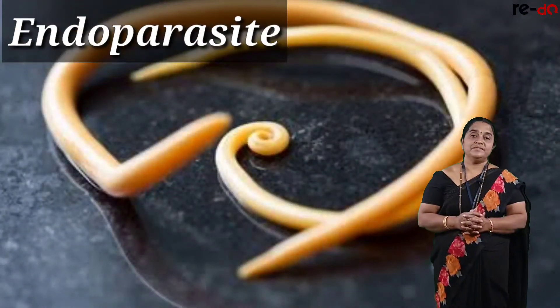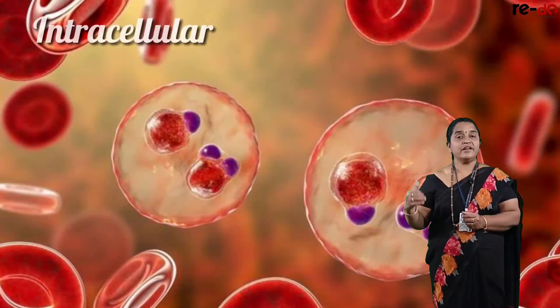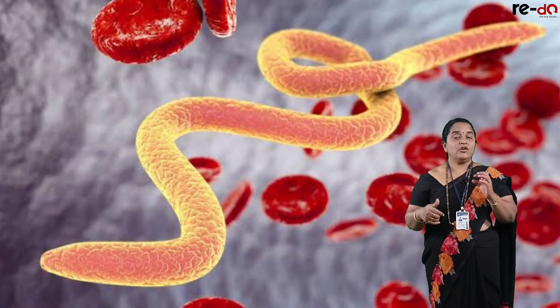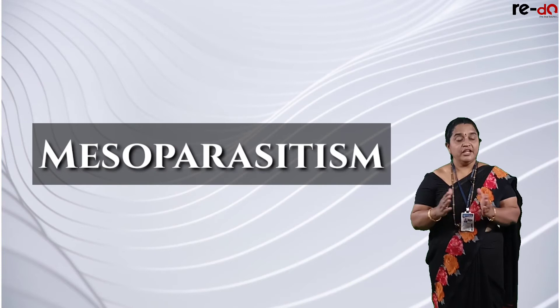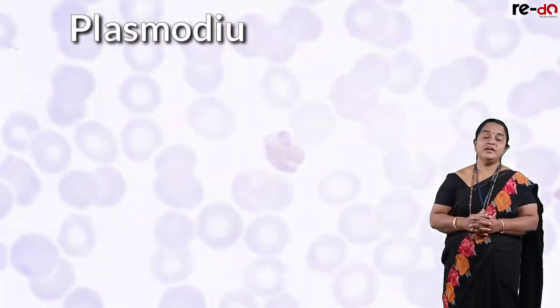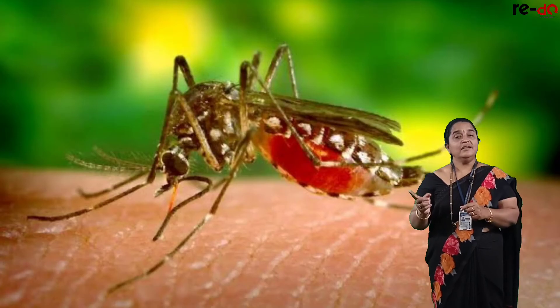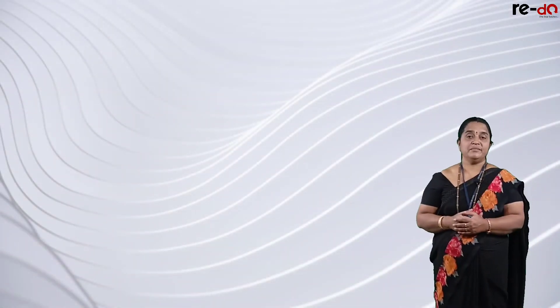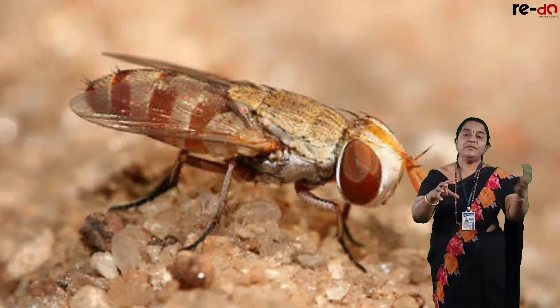Moving to endoparasites, some parasites live inside the body of the host — those living within cells are called intracellular, and those living between cells are called intercellular. Both types of parasitism are always dangerous to the host. A chain of parasites is known as epiparasitism. In mesoparasitism, different hosts are required to complete the life cycle — for example, Plasmodium, the malarial parasite, whose primary host is the mosquito for sexual reproduction and the human being is the secondary host for asexual reproduction. One more type is kleptoparasitism, where one species steals food obtained by another species.